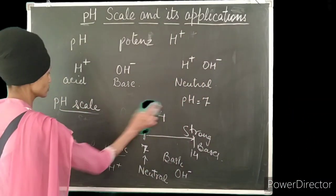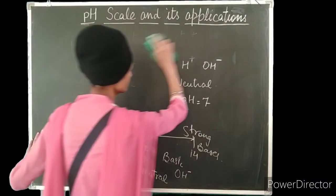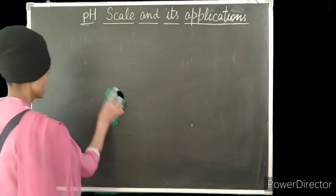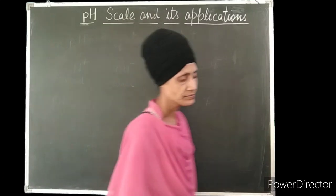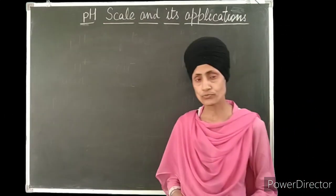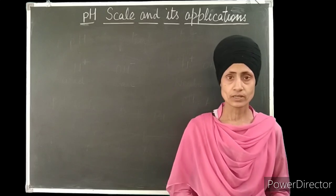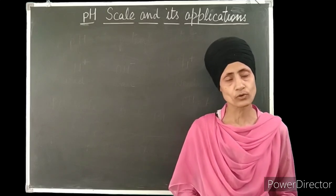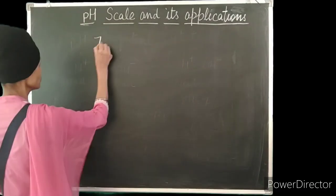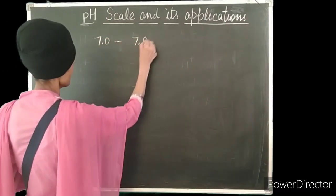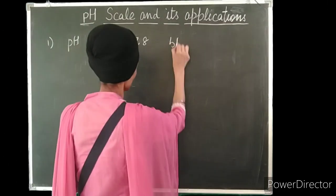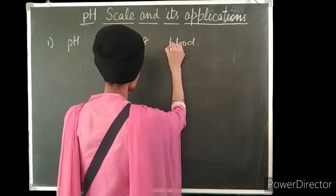So now let us do the applications of the pH in daily life. In daily life, you know that our blood has a pH range from 7.0 to 7.8. Our body works within a very narrow range of pH and that range is 7.0 to 7.8. This is the range for our body or human blood.